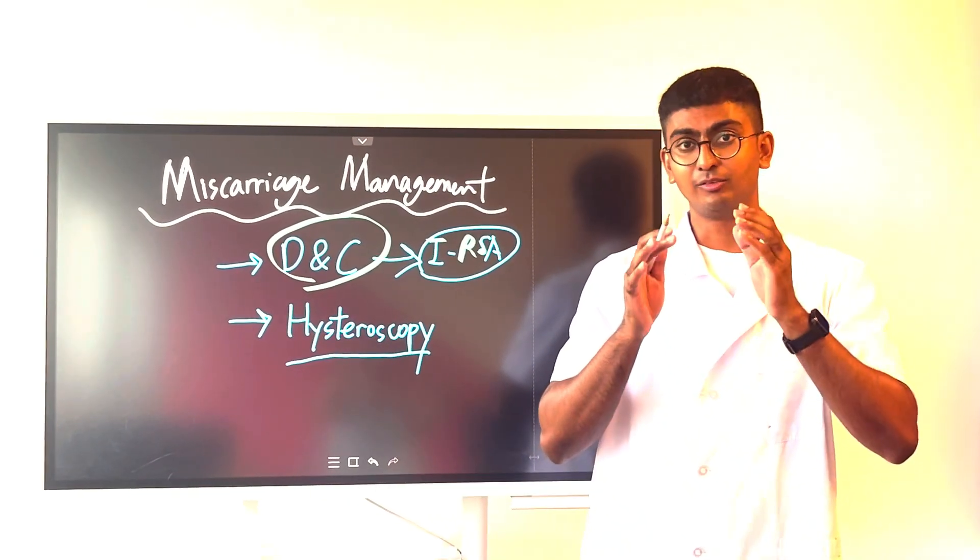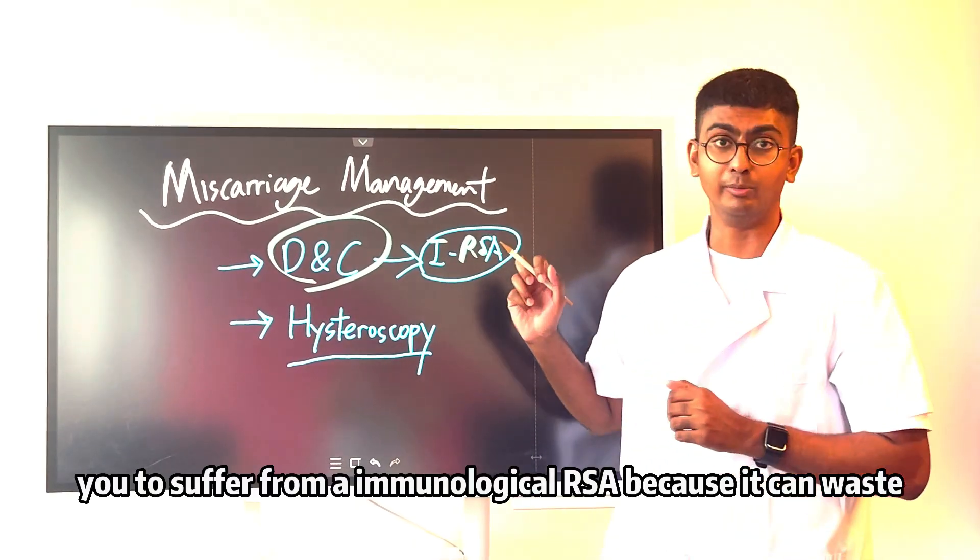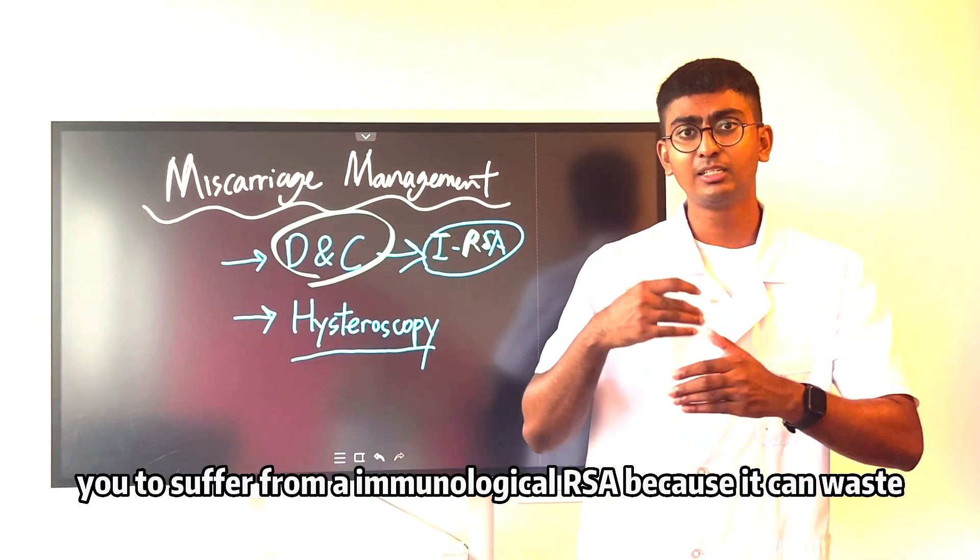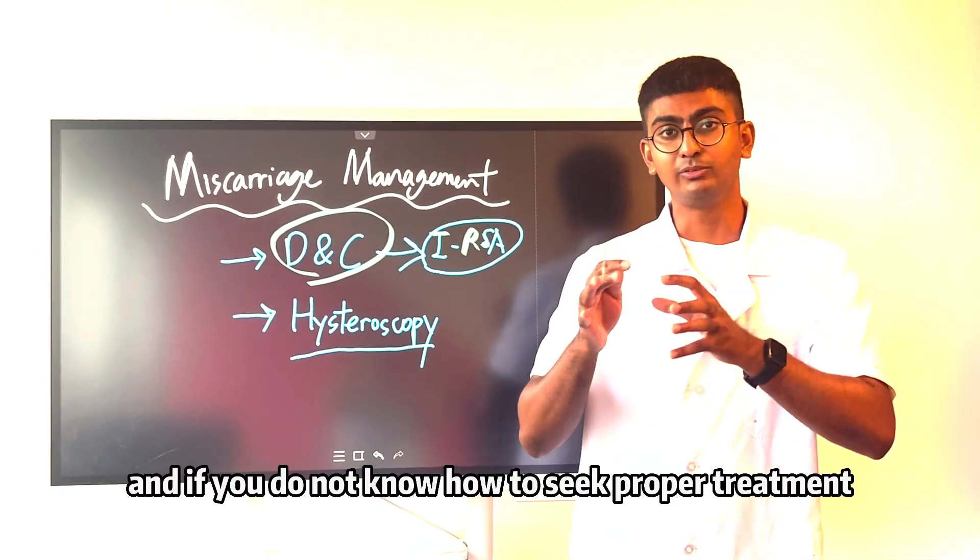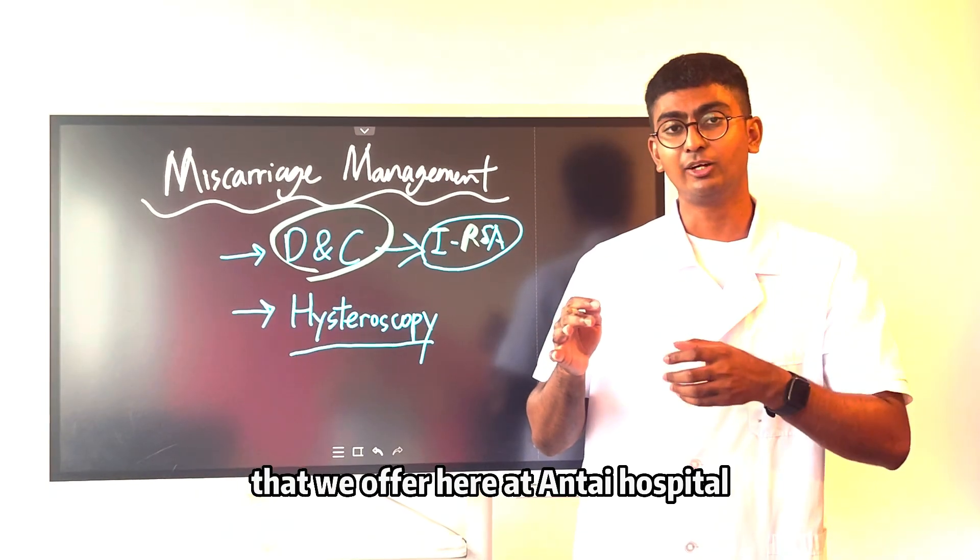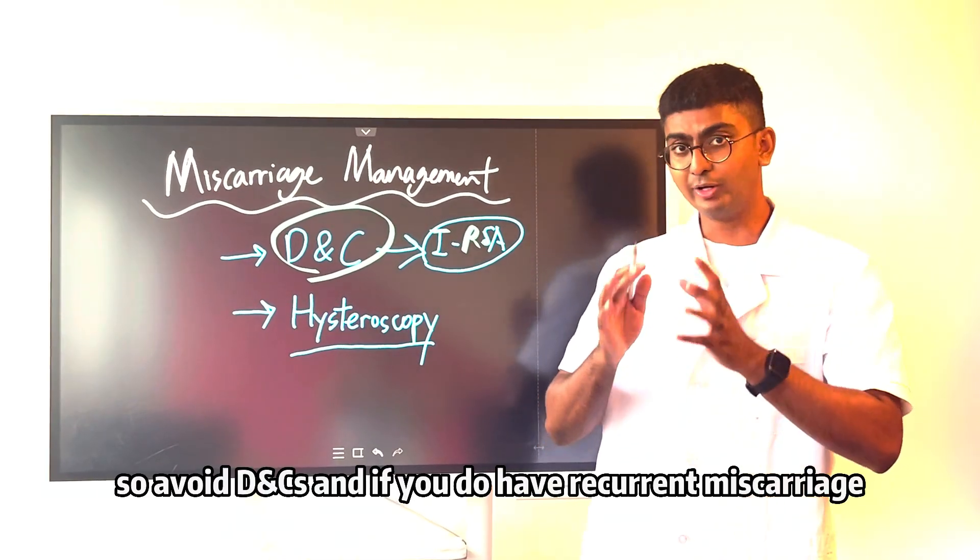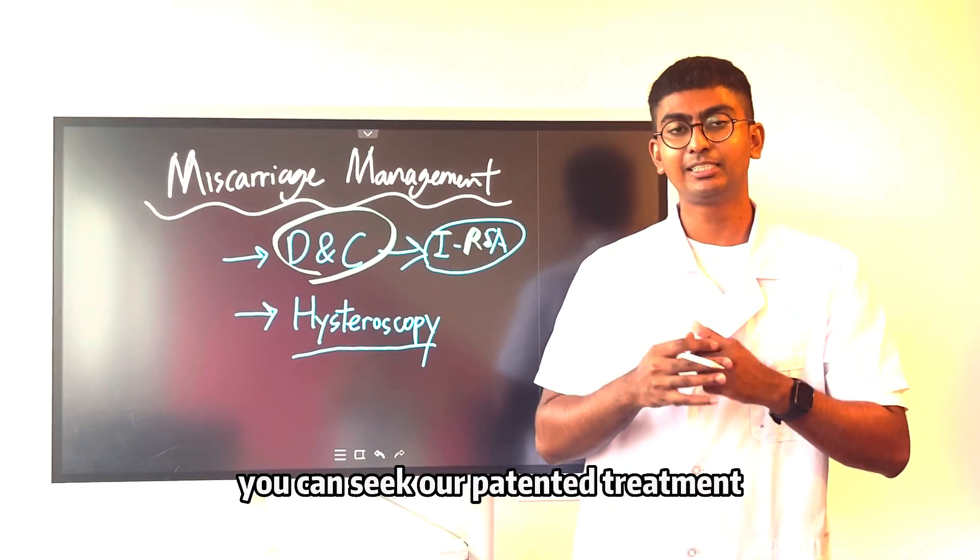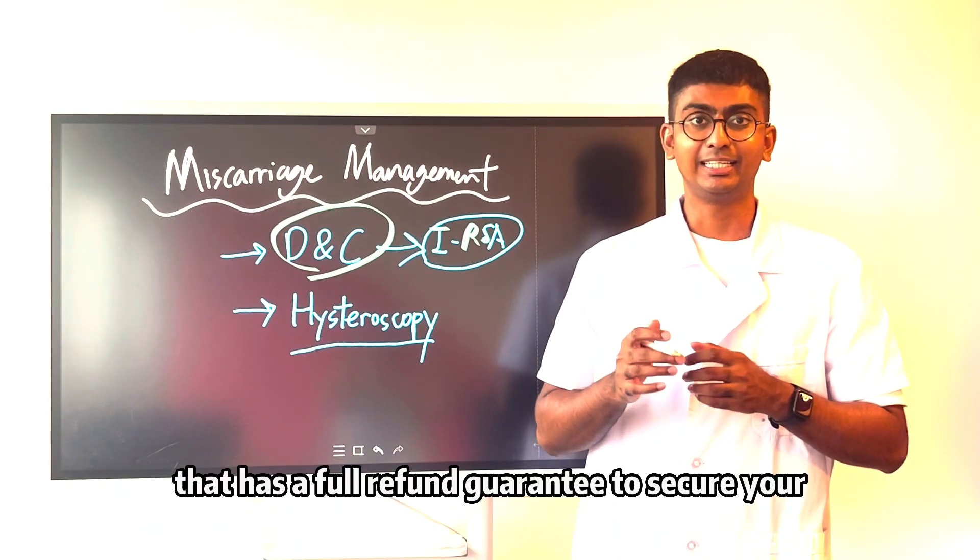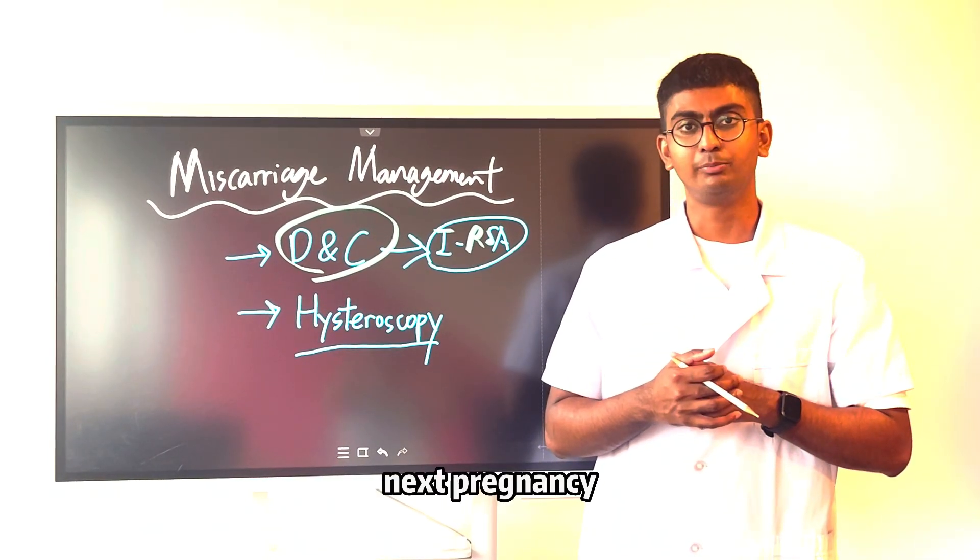At the end of the day, we can only advise you because we don't want you to suffer from immunological RSA because it can waste years of your resources. If you do not know how to seek proper treatment that we offer here at Antai Hospital, you can waste a lot of money as well. So avoid D&Cs and if you do have recurrent miscarriage, you can seek our patented treatment that has a full refund guarantee to secure your next pregnancy.